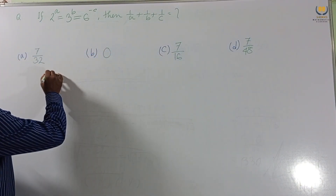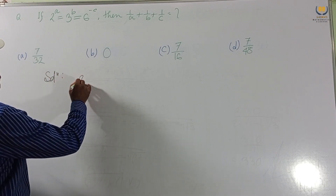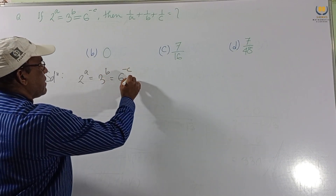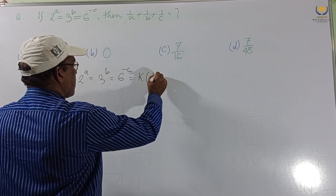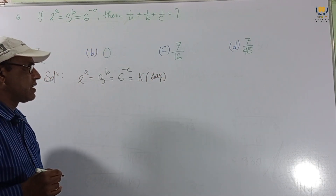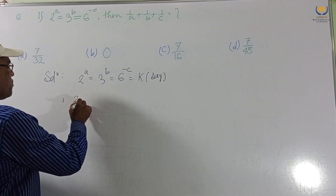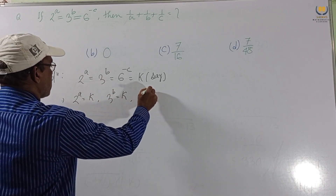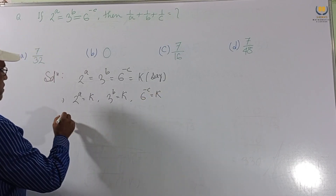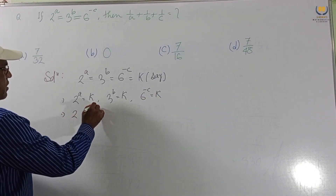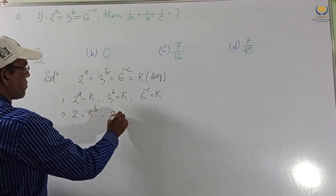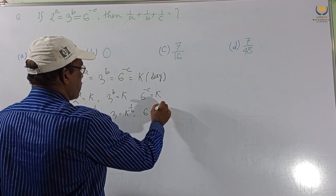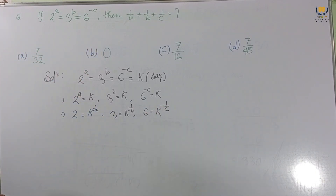Given 2^a = 3^b = 6^(−c), we set each equal to k. So 2^a = k, 3^b = k, and 6^(−c) = k. This gives us 2 = k^(1/a), 3 = k^(1/b), and 6 = k^(−1/c).